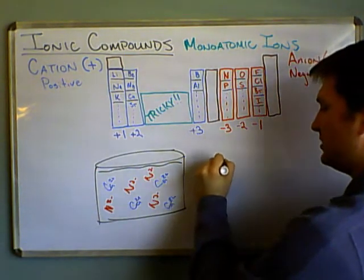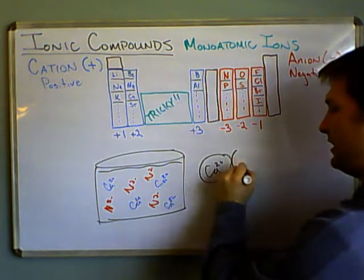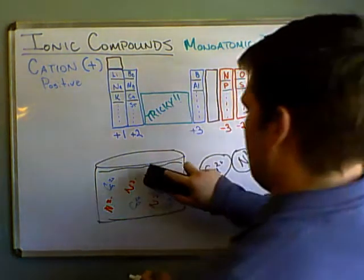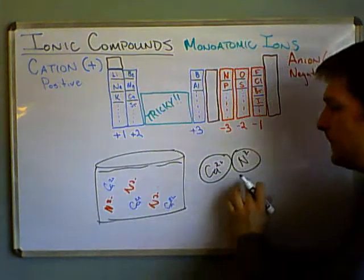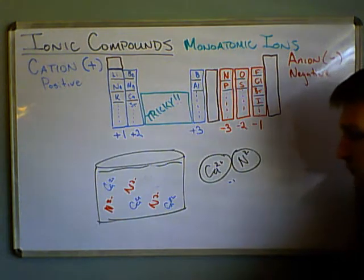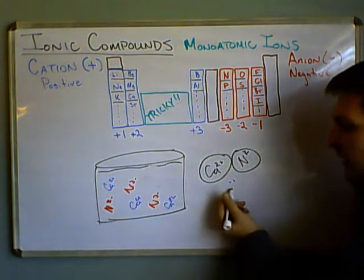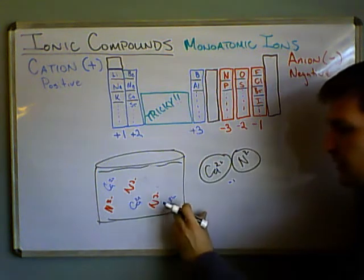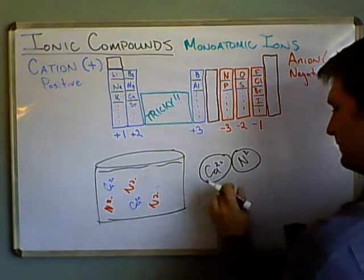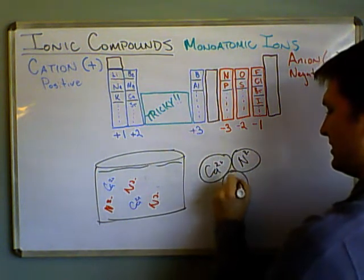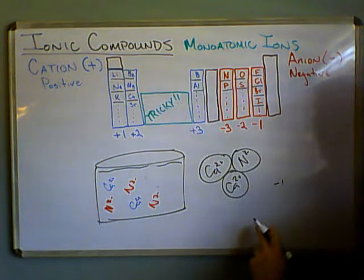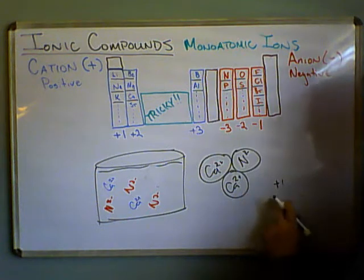So we'd have Ca 2 plus, and that's going to bind with N 3 minus. And now those guys, we're not going to consider them anymore. Now, overall, we have a net charge of minus one. So what's going to happen? Well, if you have a net negative charge, it's going to pull something positive towards it. So let's go ahead and pull that Ca 2 plus. So we have another Ca 2 plus. And now the charge was negative one, but now we've added two. So we have a net charge of plus one.